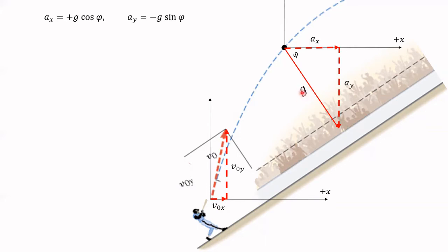If I write a letter without the arrow symbol, I'm technically referring to the length of the vector. Anytime you see a subscript y or x next to the label for a vector, you are definitely talking about the components of a vector, and those numbers can be positive or negative. For example, this component is negative — negative 9.8 times the sine of phi. A number with subscript x or y can be negative, but a number like g, which is the magnitude of the vector, will always be positive or zero.